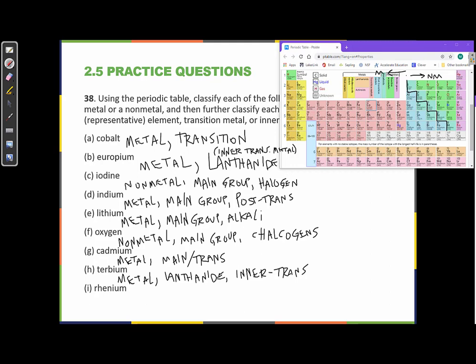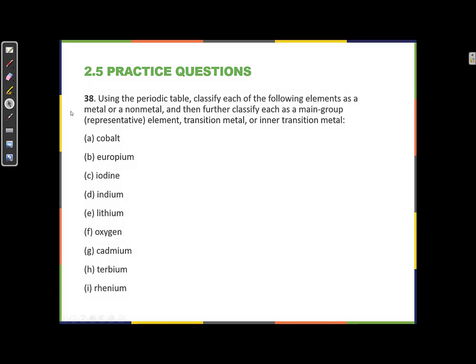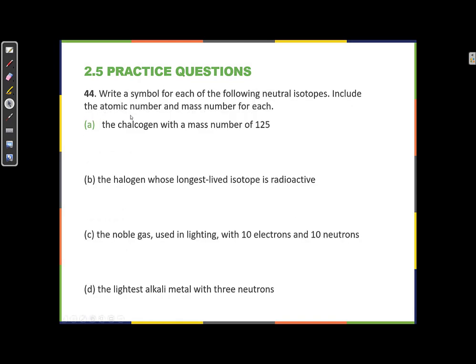Alright, and finally let's look at rhenium. Rhenium is right here. So, element number 75. Metal. It's transition metal. And this group... This column doesn't have any special name. So, it's just a transition metal here.